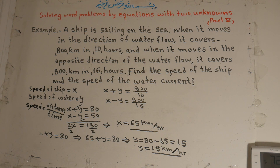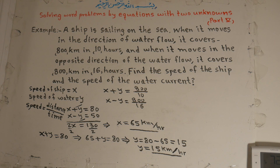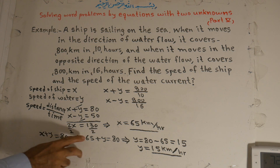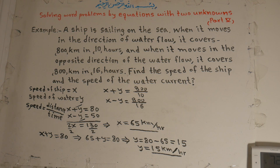Now substituting back: x plus y equals 80. With x equal to 65, we get 65 plus y equals 80, so y equals 80 minus 65, which means y equals 15 kilometers per hour. That is the speed of the water current.